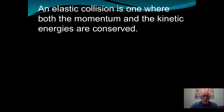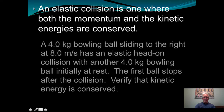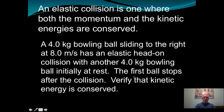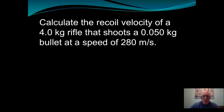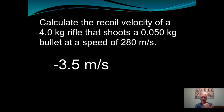An elastic collision is one where both momentum and kinetic energy are conserved — this is not always the case, so the problem must specify it's elastic. Try showing that kinetic energy is conserved in the given scenario. For the recoil velocity problem, my answer was negative 3.5 m/s — the bullet travels in the positive direction and the recoil is negative. Momentum beforehand was zero.